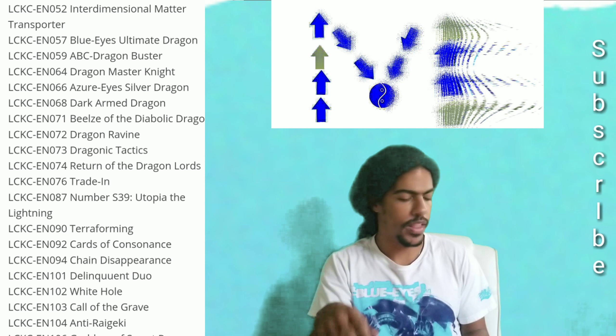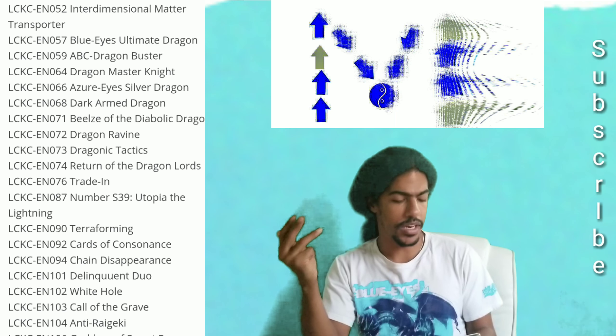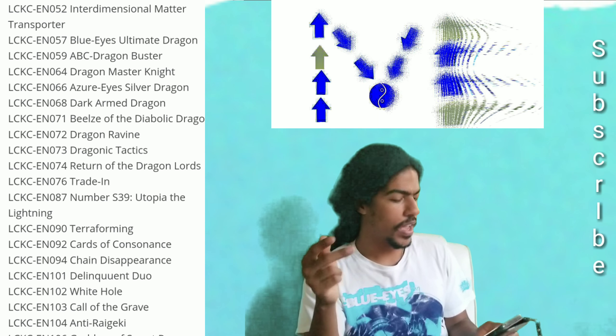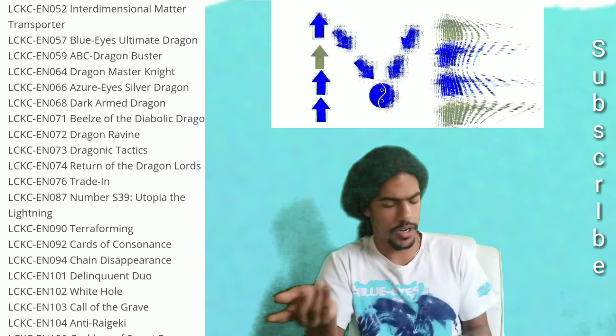I mean, it's a pretty good card. Then you have Terraforming, Cards of Consonance, Chain Disappearance, Delinquent Duo, White Howl, Call of the Grave, and Anti-Raigeki. All of those are against the current meta cards.